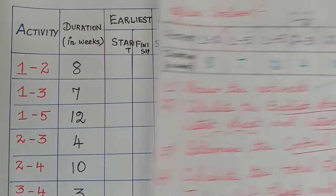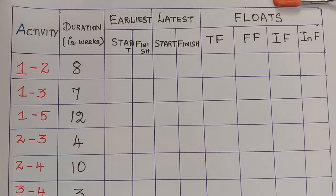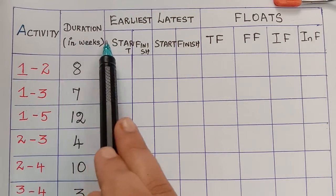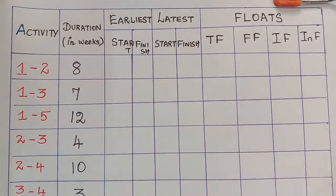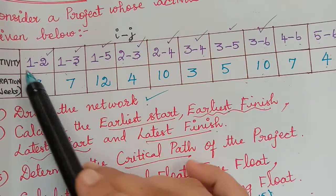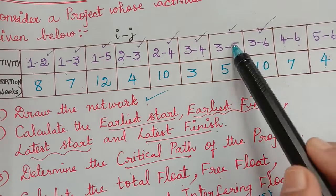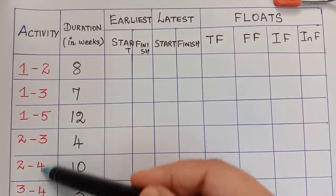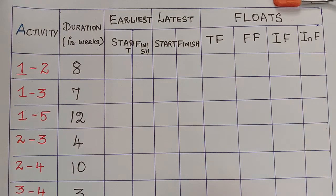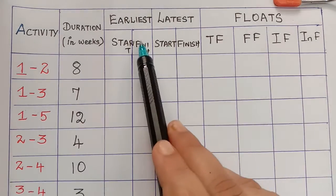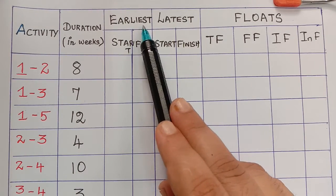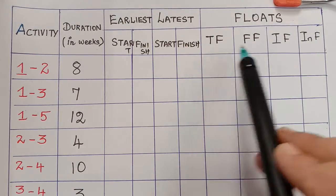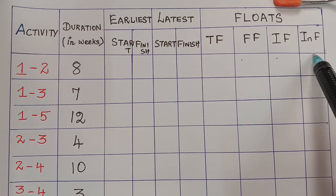In order to calculate all this, I have drawn a tabular column where the first column is the activity and the second is the duration, both given in the question. I have written all the activities and their durations in column form. Now we have to calculate earliest start, earliest finish, latest start, latest finish, and all the floats: total float, free float, independent float, and interfering float.